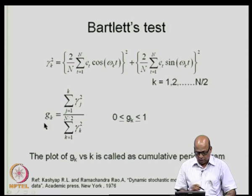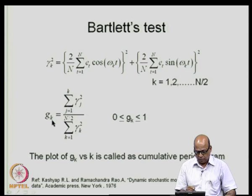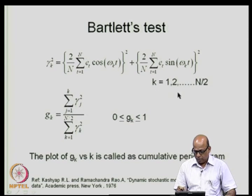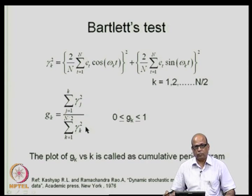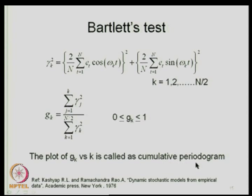Then define g_k = Σ_{j=1}^{k} γ_j² / Σ_{j=1}^{n/2} γ_j². So g_1 has one term, g_2 has two terms, and so on, normalized by the total sum. The plot of g_k versus k is called the cumulative periodogram. Because of this normalization, g_k varies from 0 to 1.